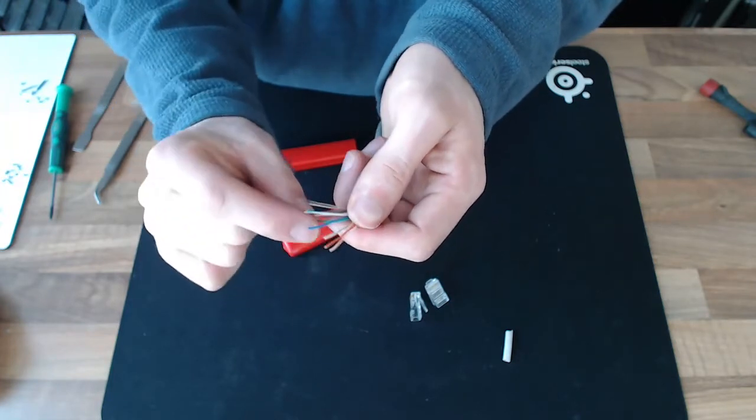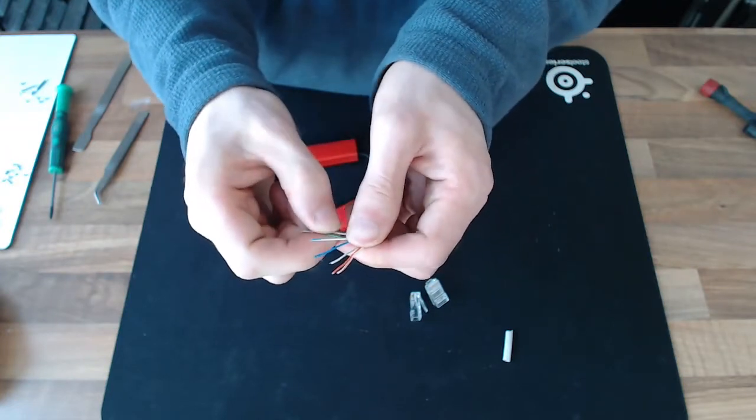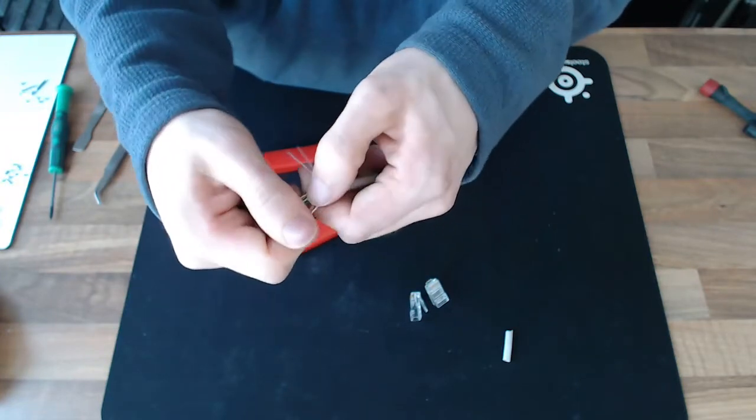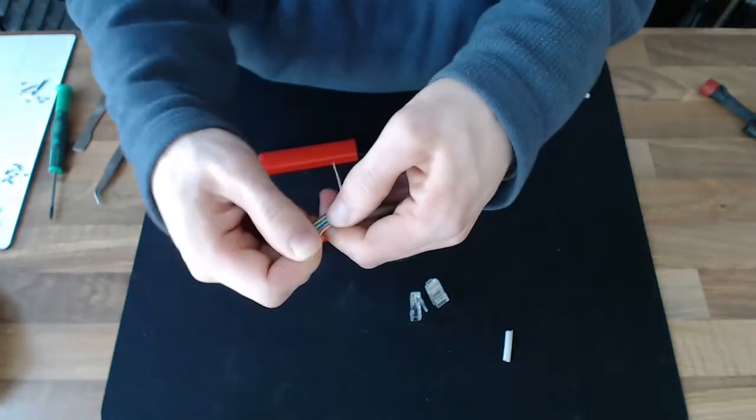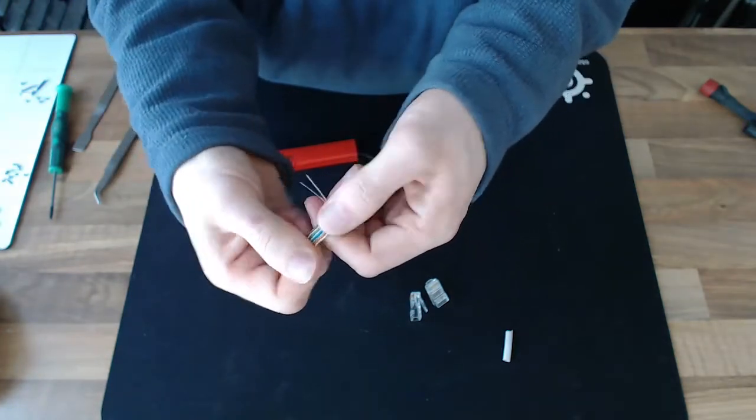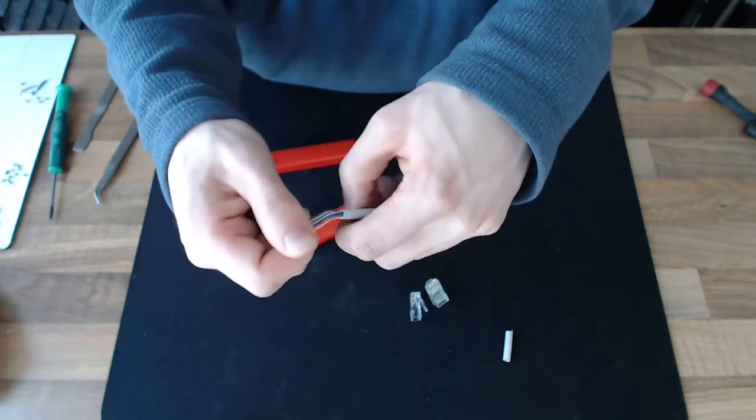The green is always the problem child. Let's try that again. There we go. So there's our flat ribbon again. And again, just try and press that back into the cable as far as you can.